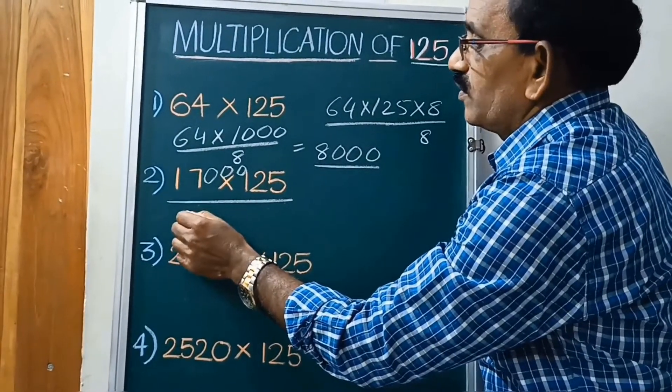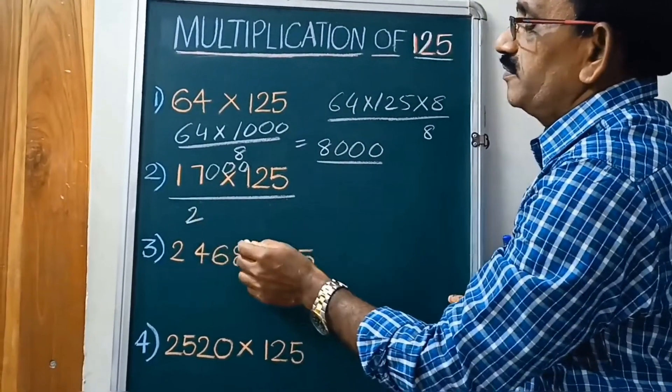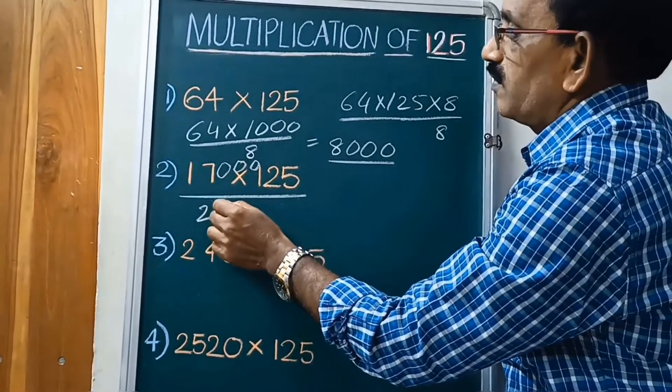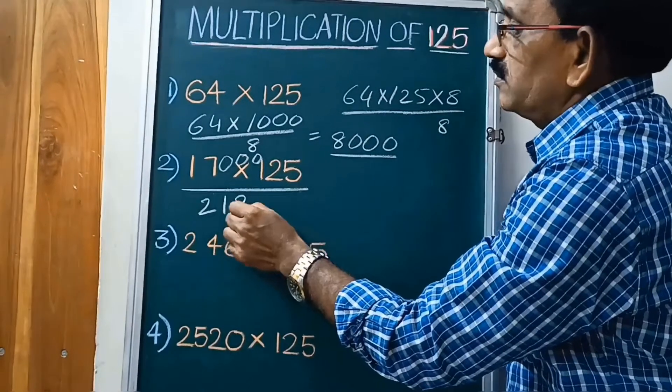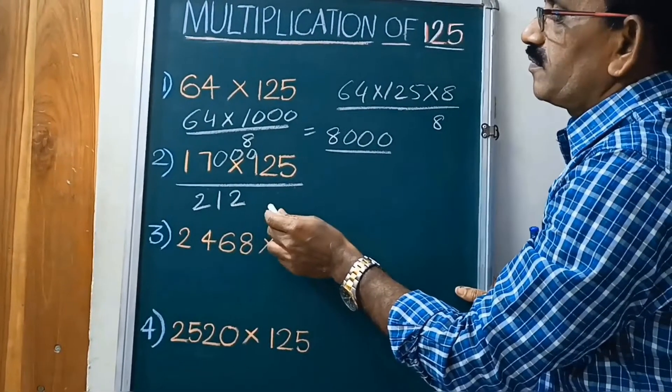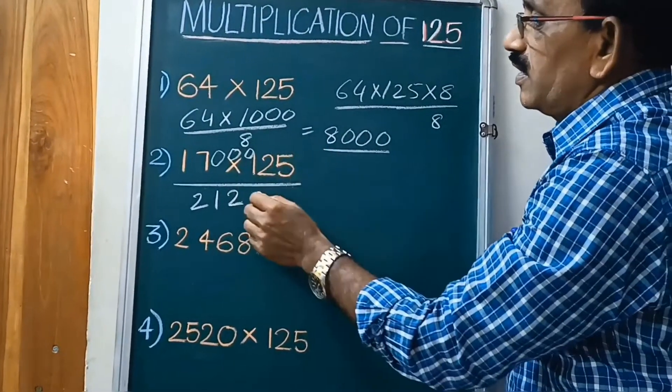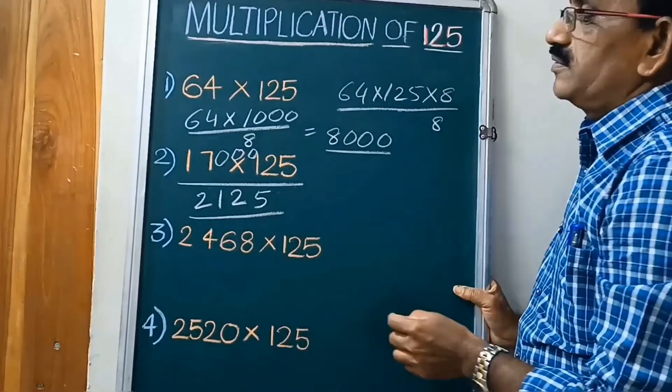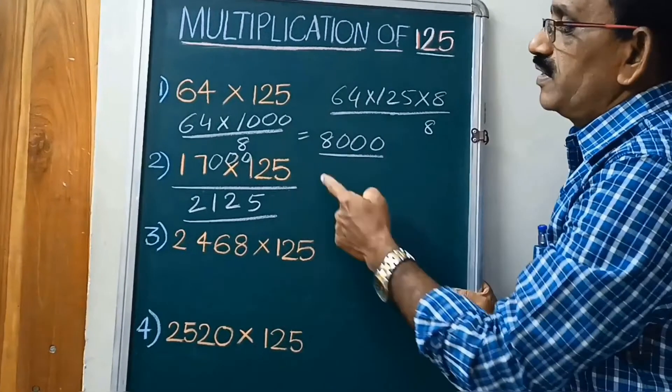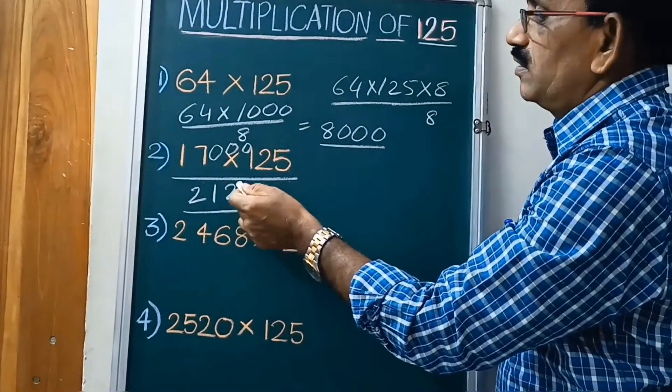8 twos are 16, 10, 8 ones are 8, remainder 2. 8 twos are 16. Next 8 fives are 40. That is the answer. 17 into 125 equal to 2125.